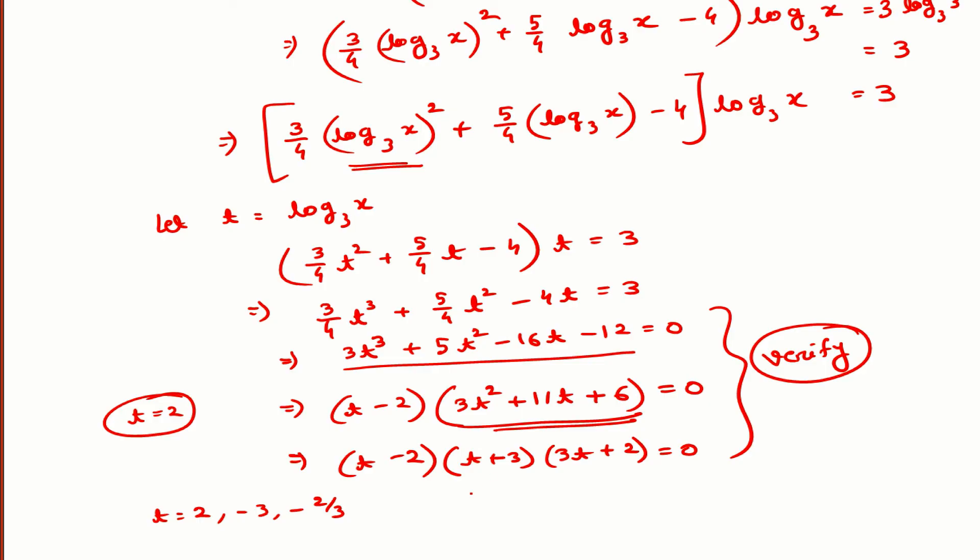What is t? t is log base 3 x. This is 2, so our x will be 3 squared. For the other two cases, we will get x equals 3 to the power minus 3, and for the last case, we will get x equals 3 to the power minus 2/3. So the roots are 3 squared, 3 to the power minus 3, and 3 to the power minus 2/3.